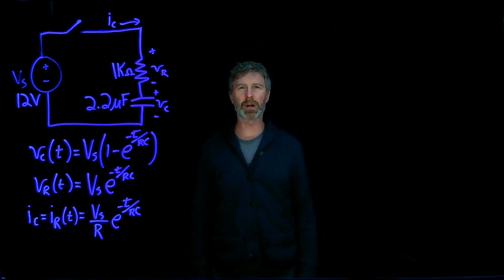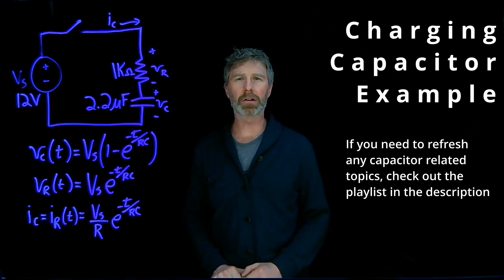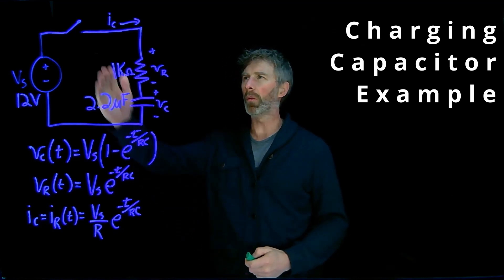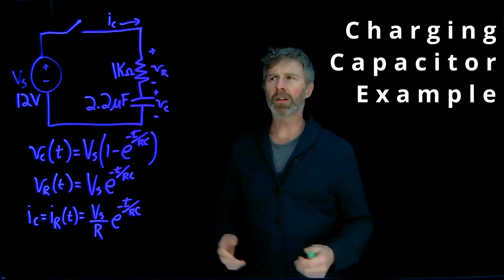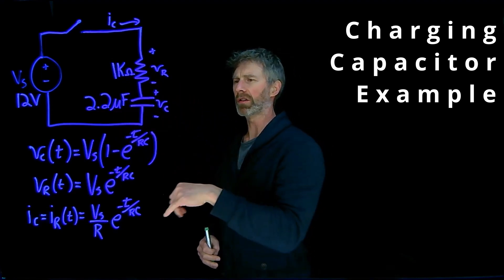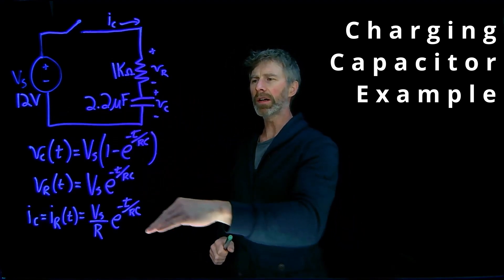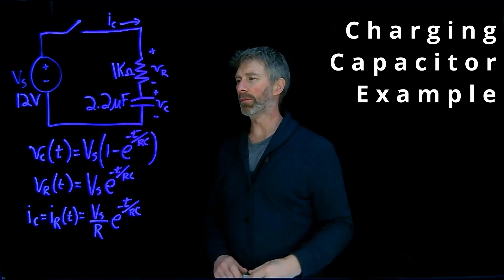Example problem time. What we're going to do is figure out the voltage across the capacitor, voltage across the resistor, and the current through those devices over a period of time when this switch closes. We're going to plug in the resistor value, the capacitor value, and the source voltage value into these equations, and then evaluate those equations at a number of different points in time.